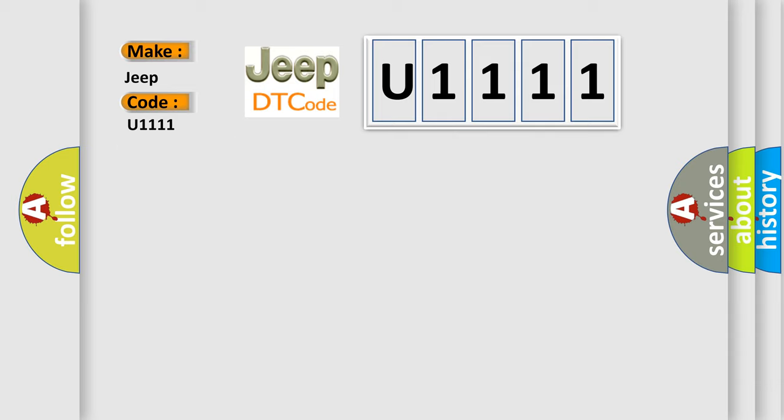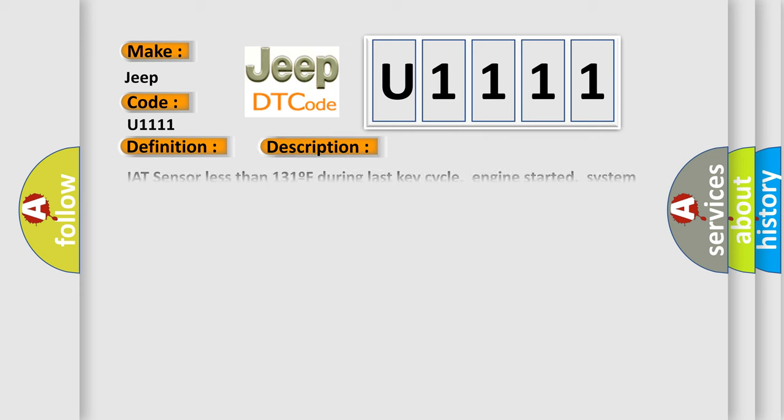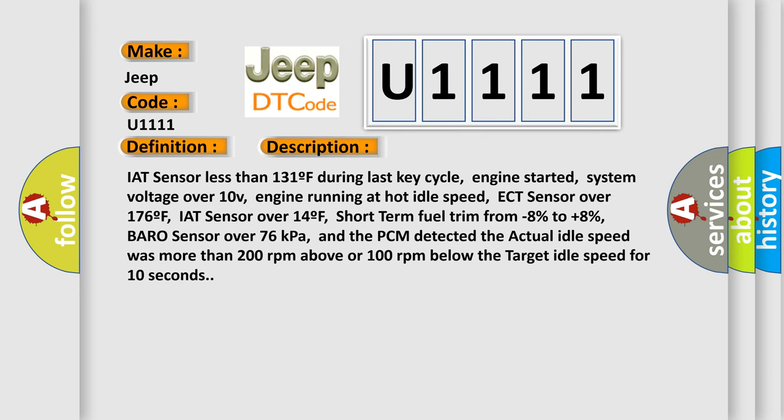The basic definition is: Idle Air Control Motor System Fault. The enabling conditions are: IAT sensor less than 131°F during last key cycle, engine started, system voltage over 10V, engine running at hot idle speed, ECT sensor over 176°F, IAT sensor over 14°F, short term fuel trim from minus 8% to plus 8%, barometric pressure over 76 kilopascals, and the PCM detected the actual idle speed was more than 200 RPM above or 100 RPM below the target idle speed for 10 seconds.